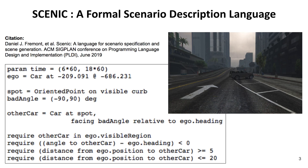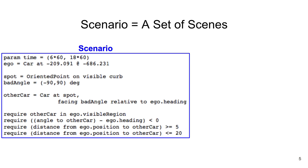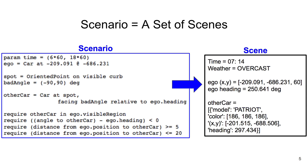Users can also define soft and hard constraints using require statements. The semantic features we use to describe scenarios are shown on the left column, and their ranges are shown on the right. In Scenic, users can define probabilistic distributions over these features. Because Scenic is a programming language, a scenario written in Scenic is equivalent to a program. An execution of the program means randomly sampling a vector of semantic feature values that satisfy user-defined distributions and hard and soft constraints. We will call such a sample vector a scene. Hence, a Scenic program is a set of scenes, and an execution of the program means sampling from its set of scenes.